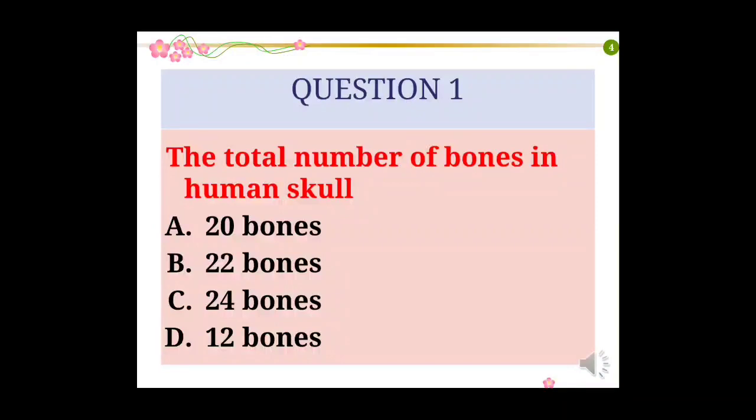Question 1: The total number of bones in human skull. Options: A. 20 bones, B. 22 bones, C. 24 bones, D. 12 bones.